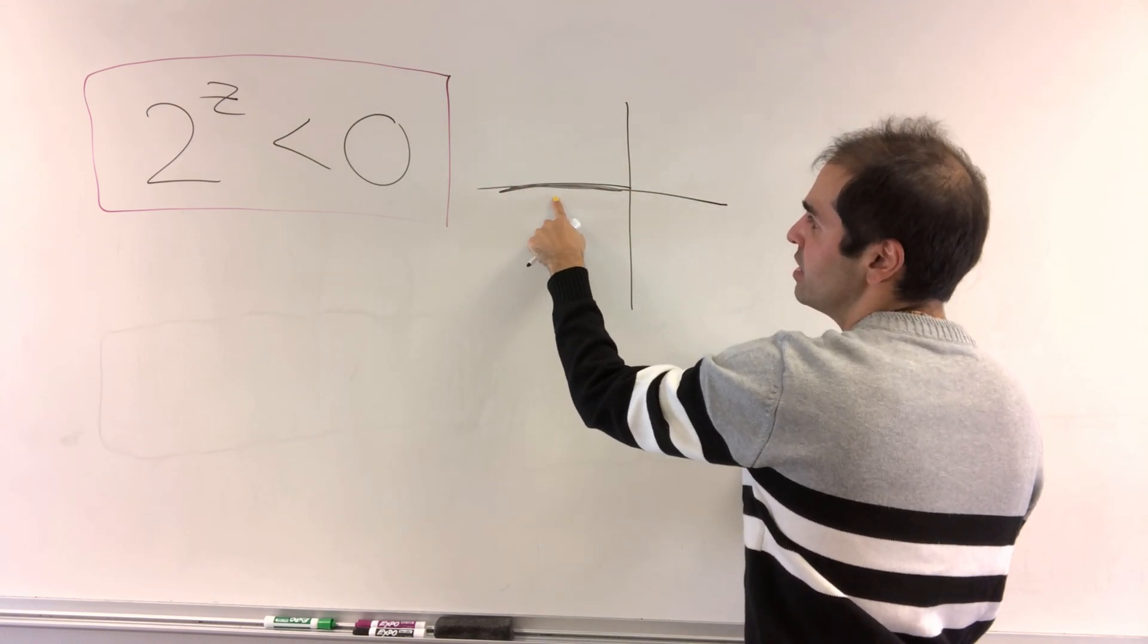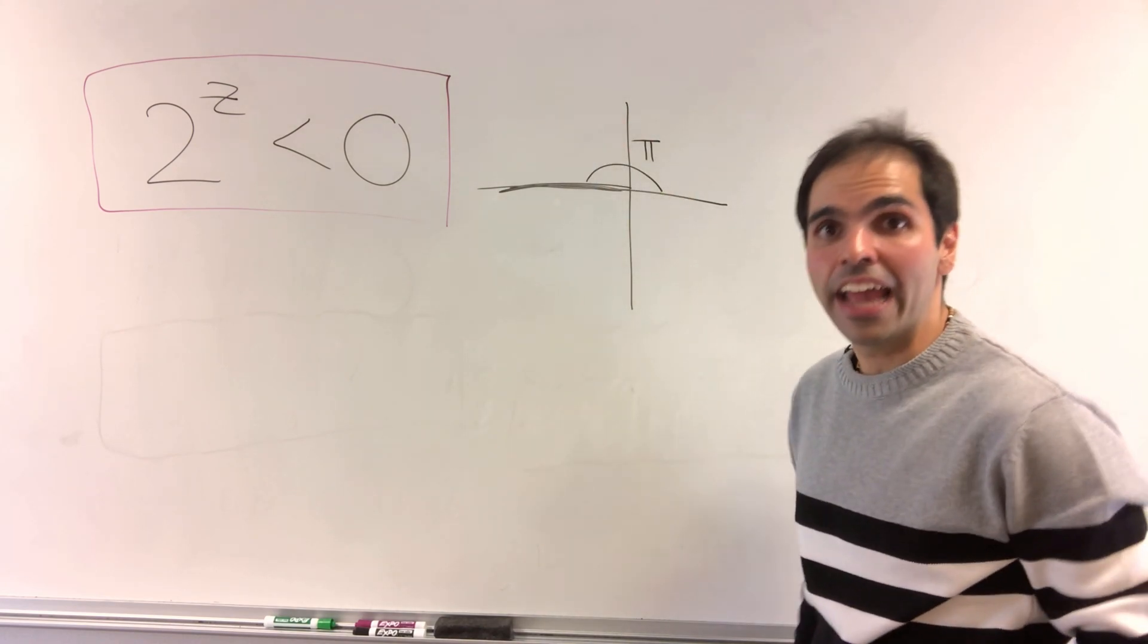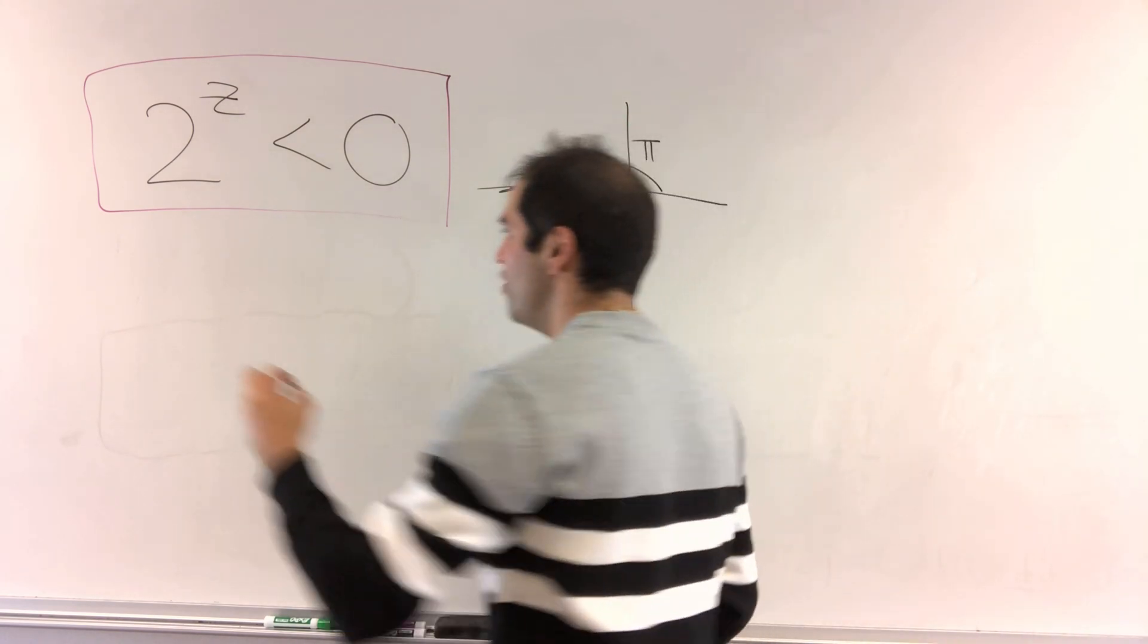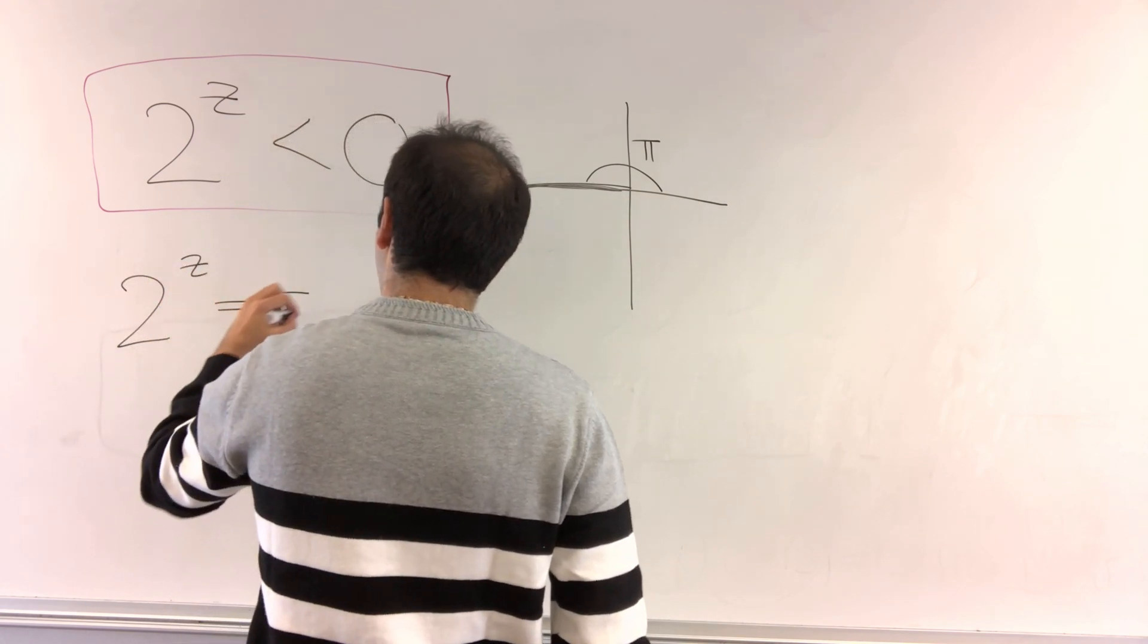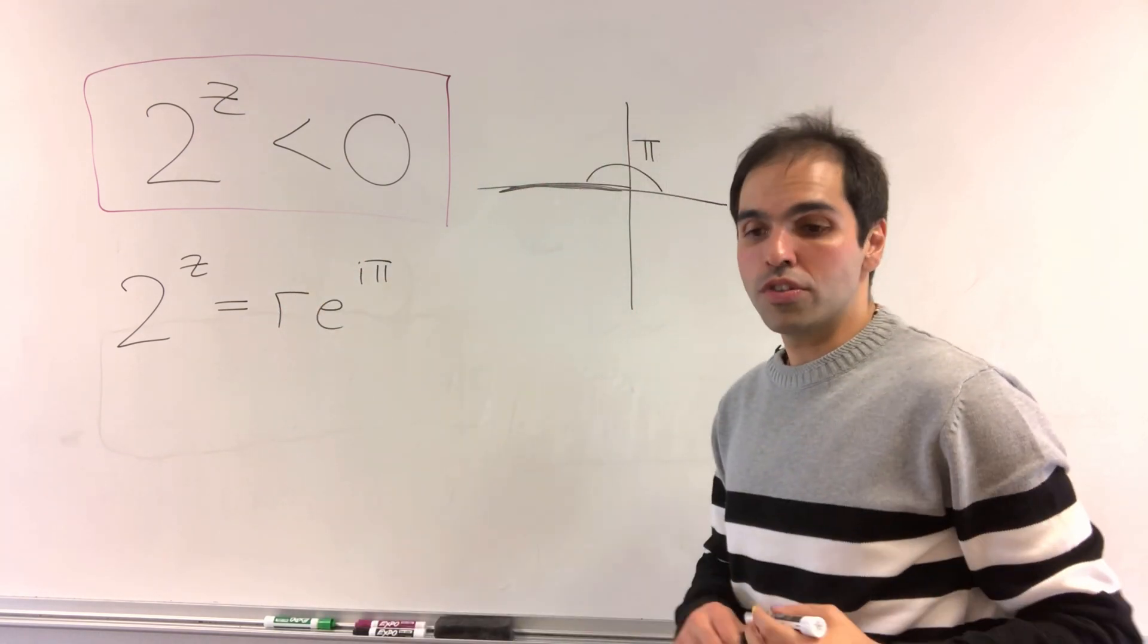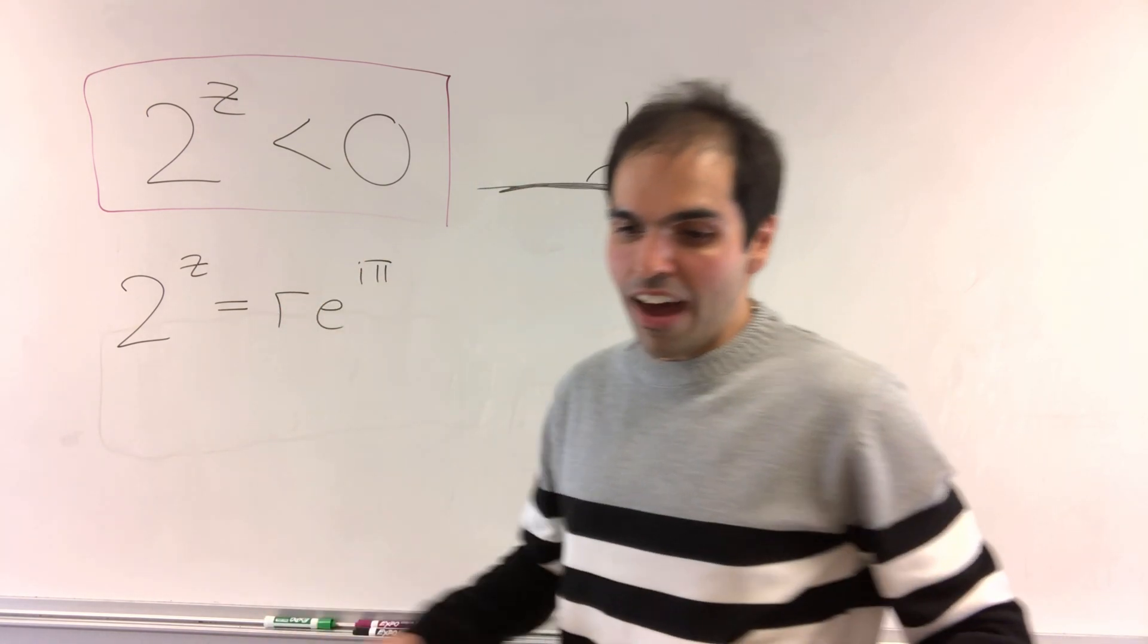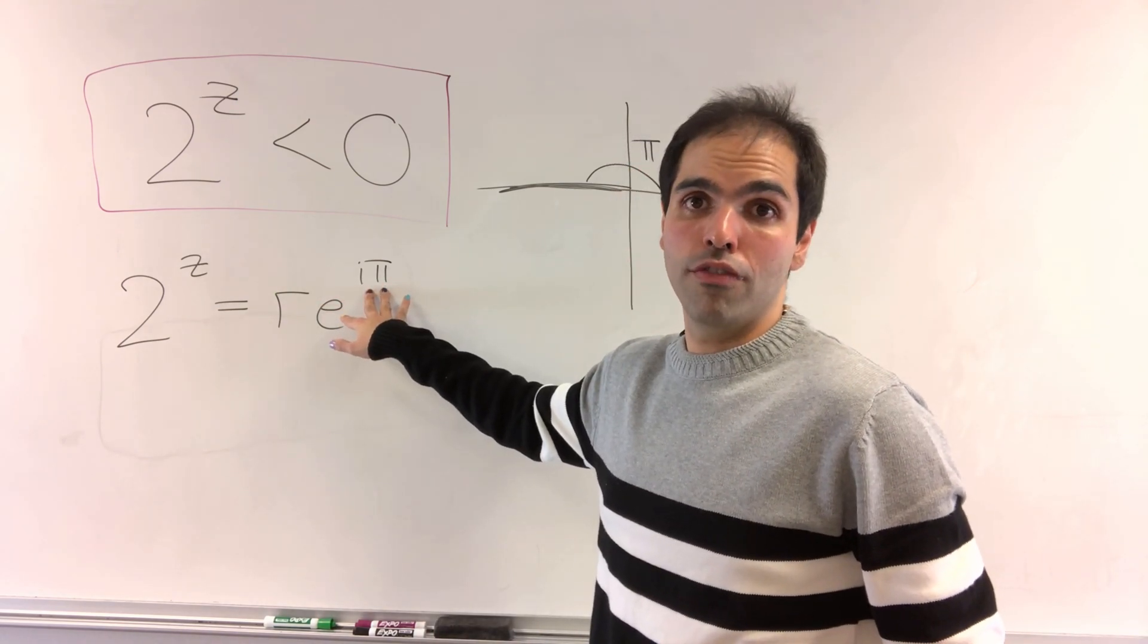It means you're on this part of the axis, so your angle is pi, and therefore you want to figure out when is 2 to the z equal to r e to the i pi for some r. And in fact, if you want to make it even spicier, add multiples of two times pi.